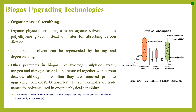Organic physical scrubbing uses an organic solvent such as polyethylene glycol instead of water for absorbing carbon dioxide. The organic solvent can be regenerated by heating and depressurizing. Other pollutants like hydrogen sulfide, water, oxygen and nitrogen may also be removed together with carbon dioxide, although more often they are removed prior to upgrading. Selexol, Genosorb, etc. are examples of trade names for solvents used in organic physical scrubbing.